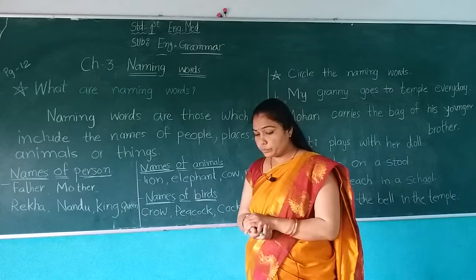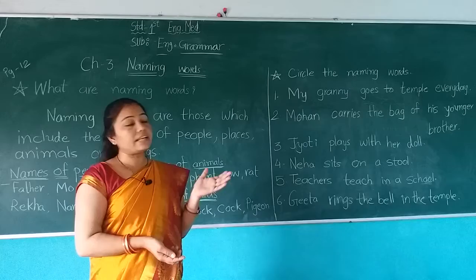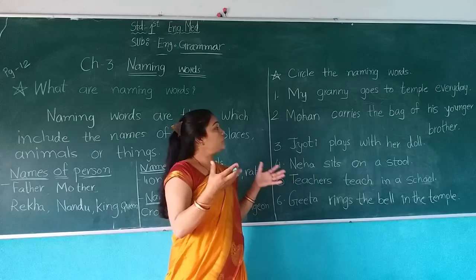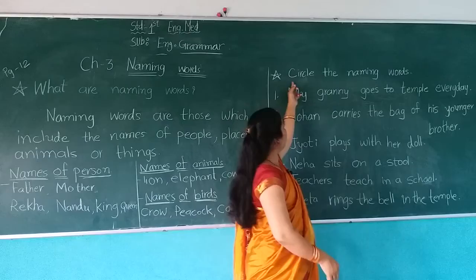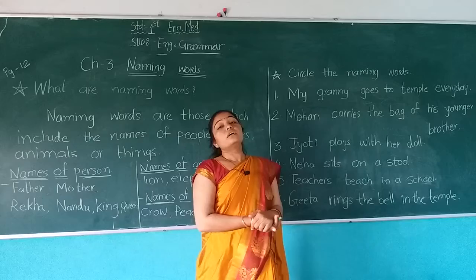Now today we are going to find out some naming words from these sentences. Some sentences are written here. First we read the sentence, then what we will do — we will circle the naming words. You have to find out which name is given there: name of a person, place, or things. Find it out and do a circle on that. The instruction says: Circle the naming words.